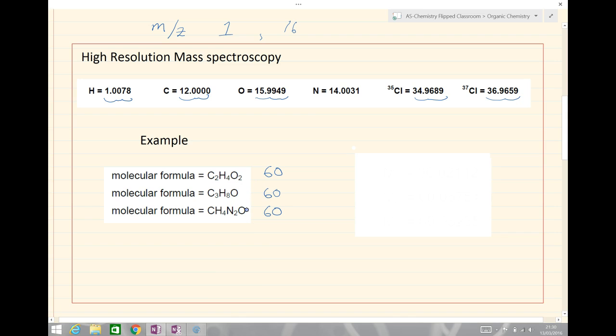However, if we decide to use a high resolution mass spectrometer, these values actually become ever so slightly different. That's because they are made up of different atoms and each of these different atoms that we see up here will have a different mass.